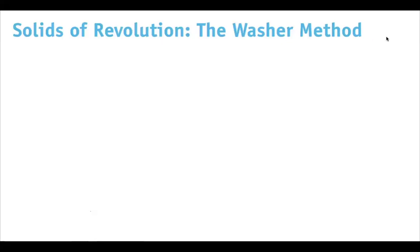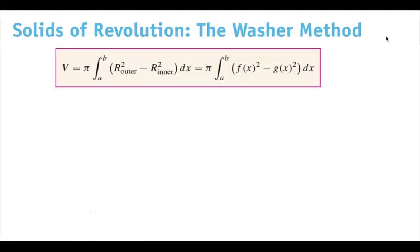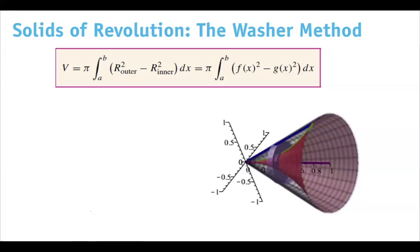In calculating the volume of a solid of revolution using the washer method, you're basically having two functions or two curves involved in forming the object. In this case, please pay attention: one curve is this curve here and the other curve is this curve here. You're taking this object and rotating it about the x-axis, and this is the 3D object that is created.